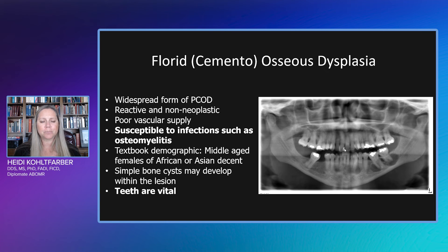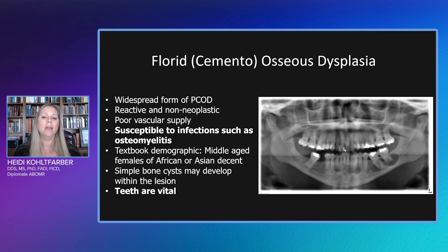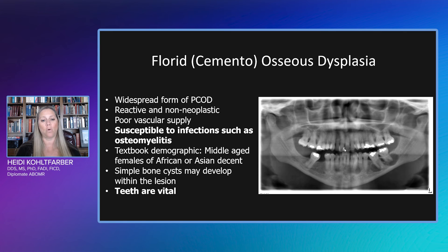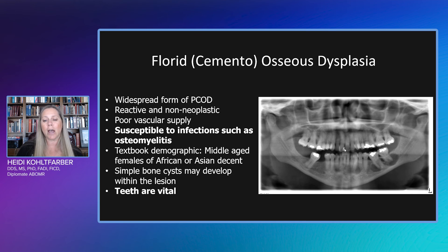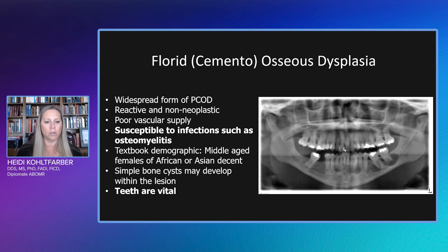These patients have poor vascular supply and increased susceptibility to infections such as osteomyelitis. So we want to make sure to really stress the home care and make sure they're visiting their dentists regularly to ensure there are no gross carious lesions that could cause osteomyelitis. The textbook demographic for this particular entity is a middle-aged female of African or Asian descent. But lesions haven't always read the textbook — you can easily find this in a Caucasian male, an older male, an older female, or a younger individual. I really go more by what this actually looks like radiographically.